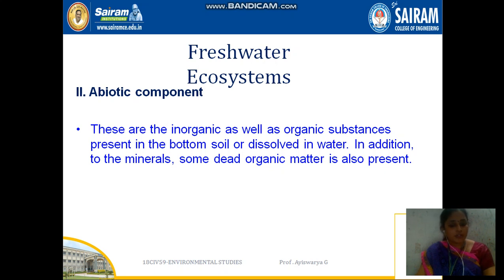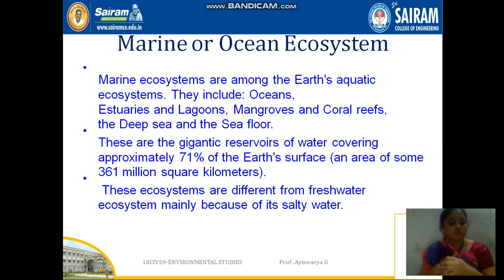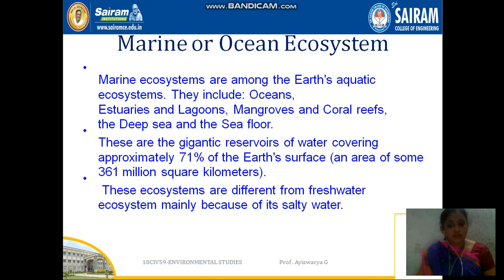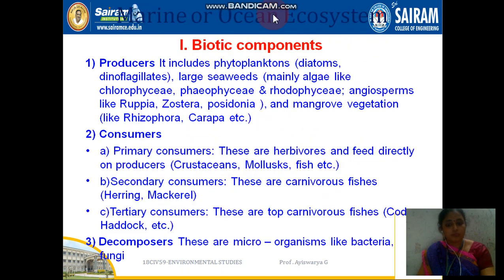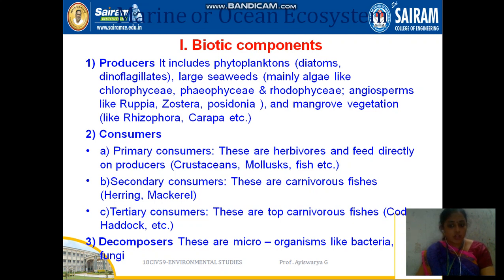The next ecosystem is the marine or ocean ecosystem. It is an aquatic system covering about 71% of the Earth's surface with gigantic reservoirs. Marine ecosystems are very different from freshwater ecosystems because they are very salty. Again, we have biotic and abiotic components. Producers include phytoplankton, seaweeds, and mangrove vegetation.